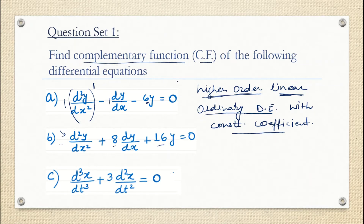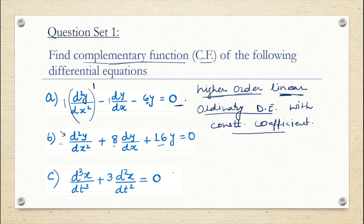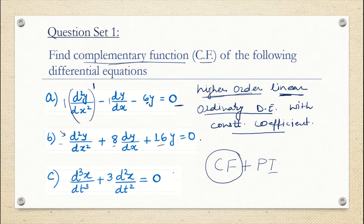To find the solution of this differential equation, you have to find the complementary function. Here one more thing to notice is that all right-hand sides are 0. When the right-hand side is 0, the ordinary differential equation becomes a homogeneous equation. To find the general solution of a homogeneous ODE, we just need to find the complementary function, that is CF. In coming classes, when the right-hand side has some function, the general solution will be CF plus PI — complementary function plus particular integral.